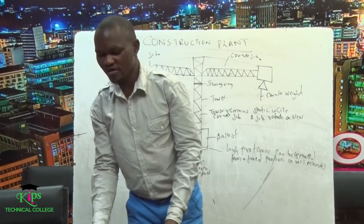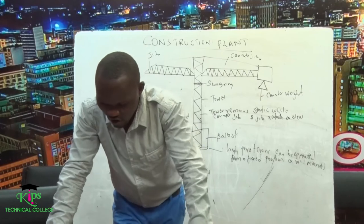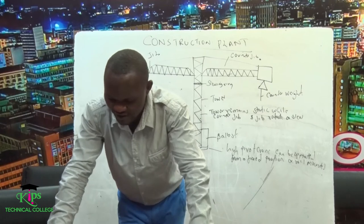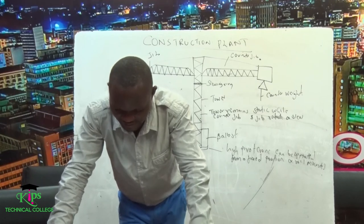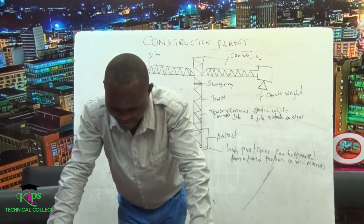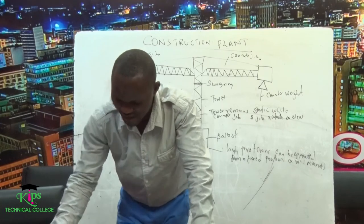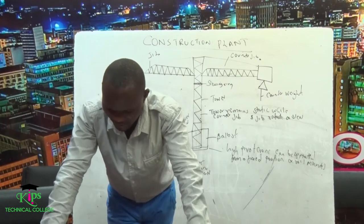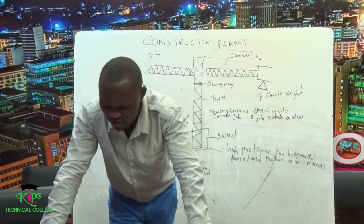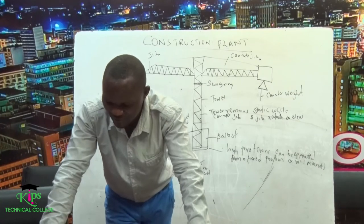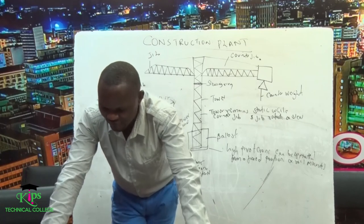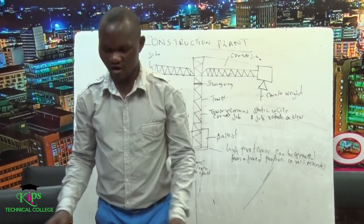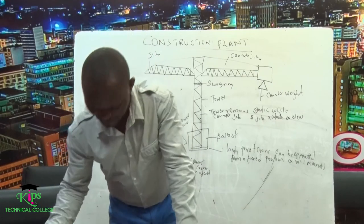Another type of crane is the truck-mounted or crawler crane. It has the following parts: jib suspension ropes, a diesel-powered crawler unit with 360-degree slewing capacity, a hoist block, multiple falls of rope, a flying jib attachment, and a pendant luffing rope.